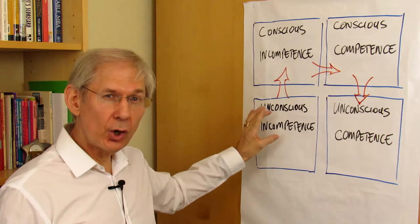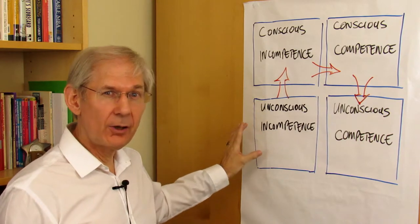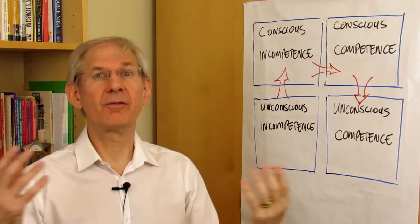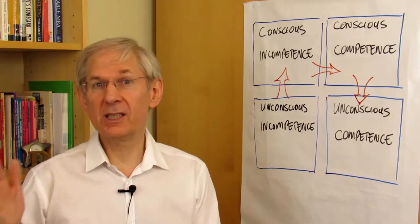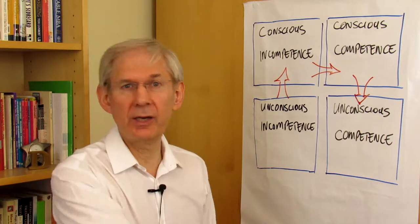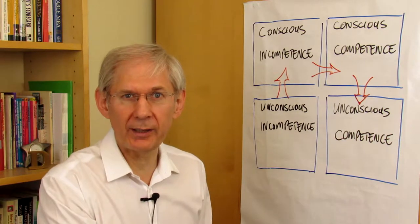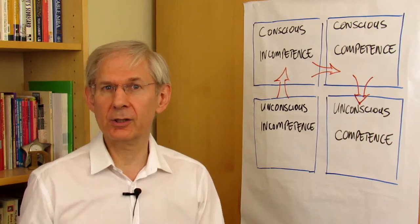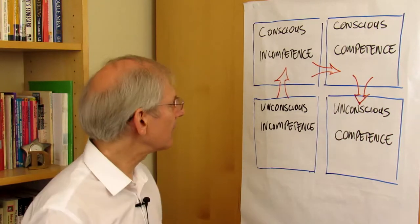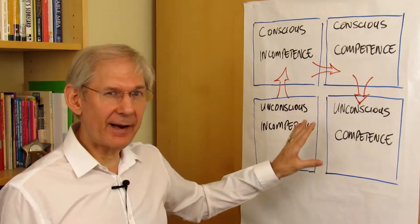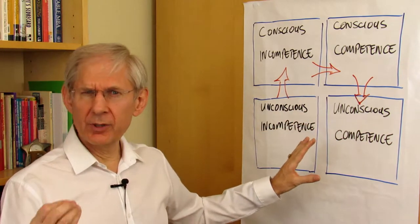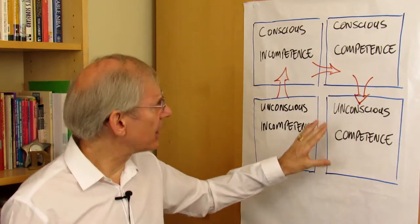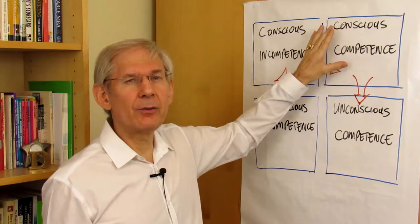There are other people, however, who you may want to delegate that task to, who may be at a level of unconscious incompetence. They may be blissfully unaware — especially of all those little things that you've already put into your long-term memory and do automatically at an unconscious level. So in order to delegate effectively, especially when it comes to more complex tasks and skills, you need to be able to break things down.